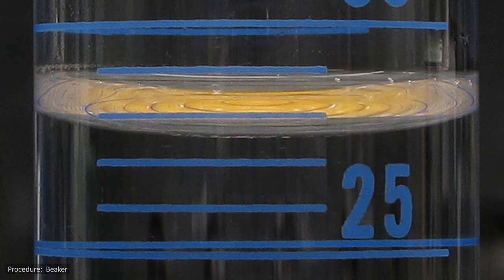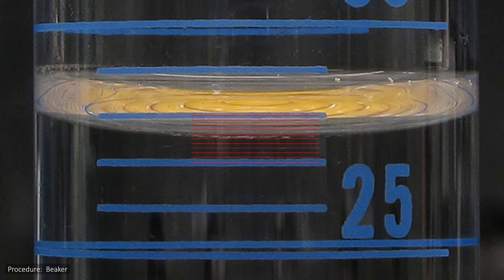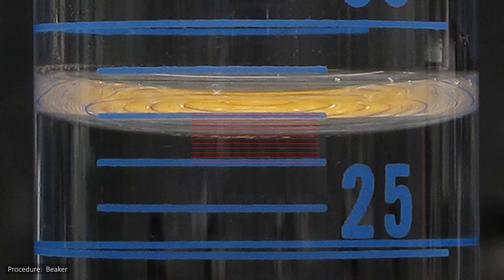To read this properly, we will use our imagination to add an extra set of markings between the real ones that divide the space between the real markings into 10 segments. Since the real markings go up in increments of 1 milliliter, our imaginary ones will go up in increments of 0.1 milliliter. Now we just have to figure out which of these imaginary lines the meniscus's bottom lines up best with. In this case, it seems to line up best with the 27.5 milliliter marking,